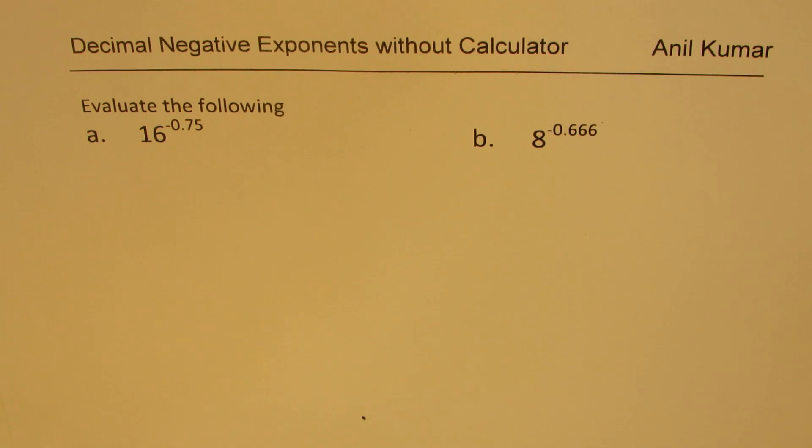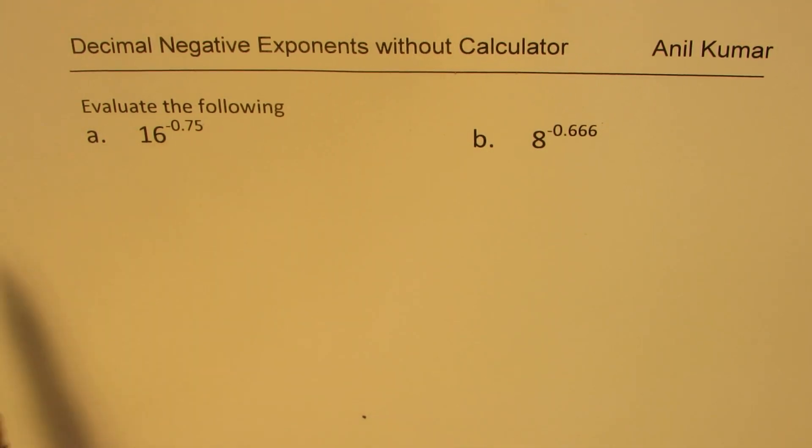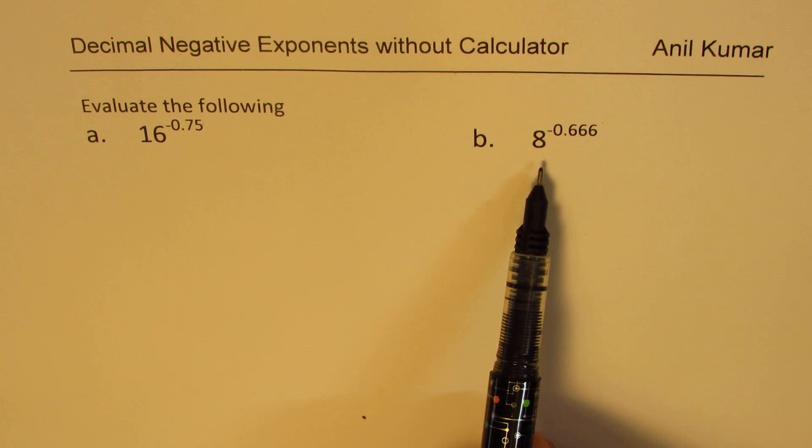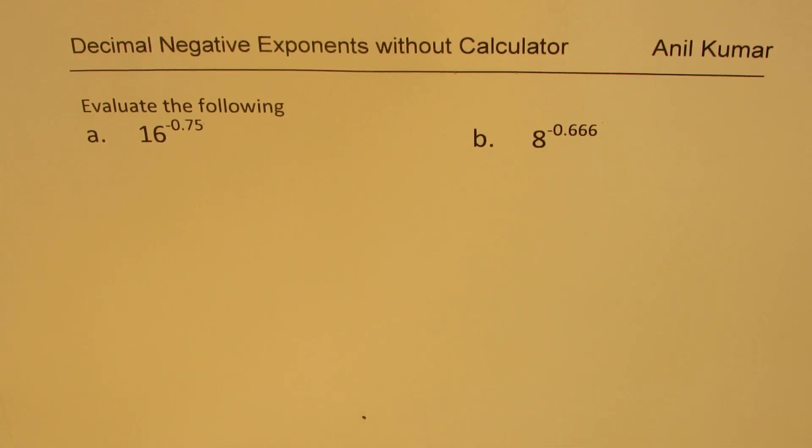Here is a request for calculating values for numbers with negative exponents, rather negative decimal exponents. So to explain the concept, I have taken two different examples. We will now evaluate 16 to the power of minus 0.75 and also 8 to the power of minus 0.666, that is 6 recurring. You can always pause the video, answer the question and then look into my suggestions.